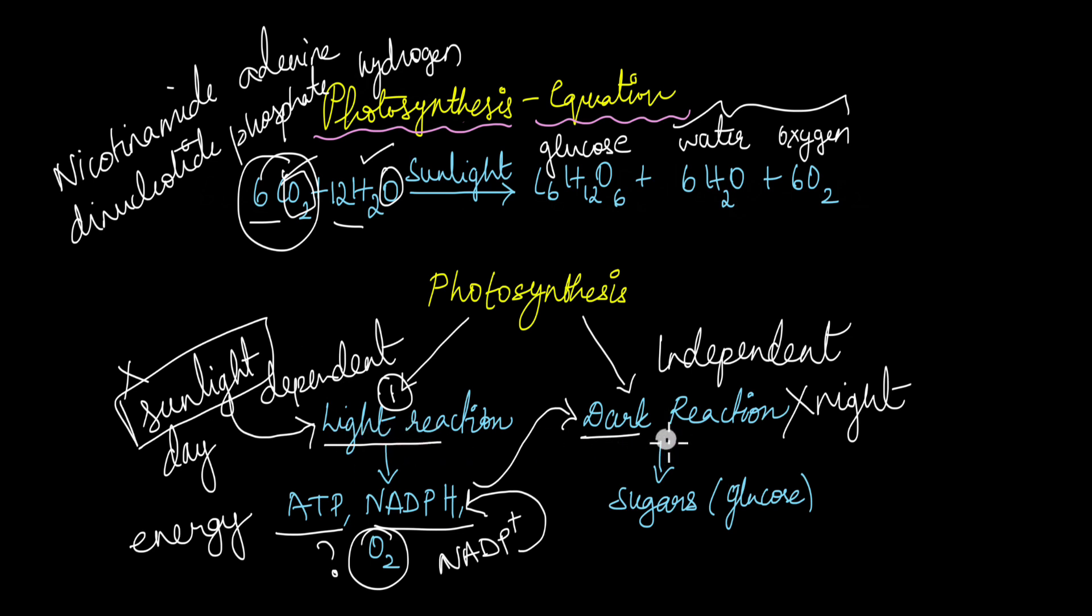Before that, let's take a look at what dark reaction involves. Dark reaction is also known as carbon fixation because it literally involves fixing the carbon in the carbon dioxide into the glucose, into sugars. So here is where carbon dioxide even enters the picture of photosynthesis. Only in the dark reaction, whatever is absorbed from the atmosphere is used to produce sugars or glucose.